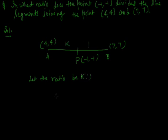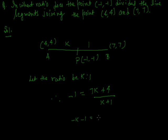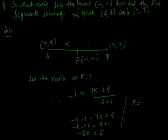Therefore, -1 is equal to (7k + 4) upon (k + 1). So -k - 1 = 7k + 4, which gives -k - 7k = 4 + 1. Therefore, -8k = 5, so k = -5/8.